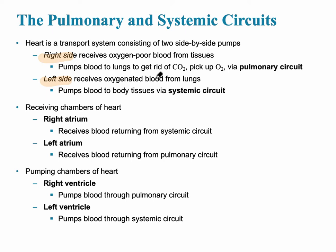The right side's job is to receive oxygen-poor blood from the tissues, and that blood then goes to the lungs via the pulmonary circuit to pick up oxygen. The left side of the heart receives oxygenated blood from the lungs and pumps it to the body to deliver oxygen and nutrients to the entire body.